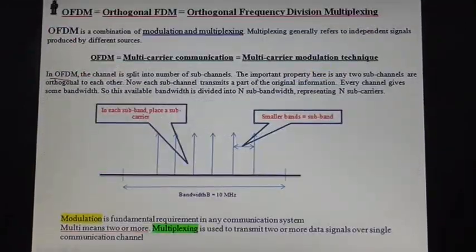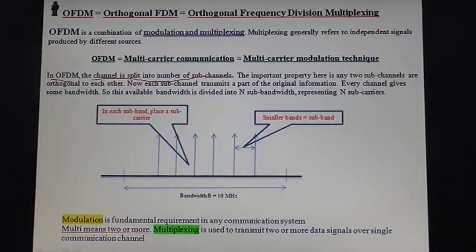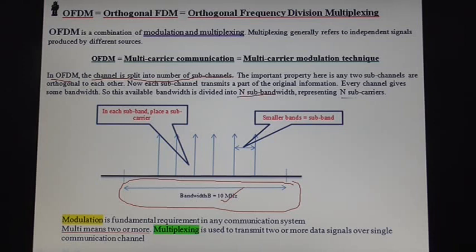In OFDM, the channel is split into a number of sub-channels. Suppose a given communication system has a channel bandwidth of 10 MHz. This 10 MHz channel bandwidth is divided into N sub-channels, and the important property is that all N sub-channels are orthogonal to each other.